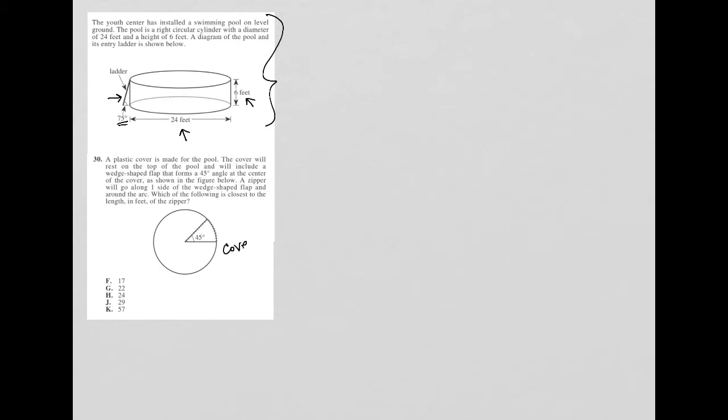Here is our cover. A zipper will go along one side, so we see the zipper goes along one side of the wedge-shaped flap and around the arc. We see where the zipper is.